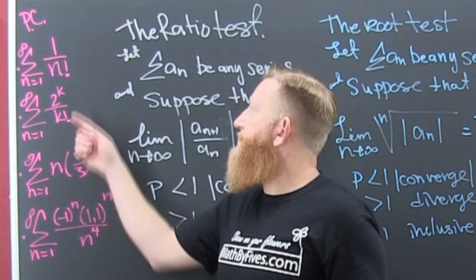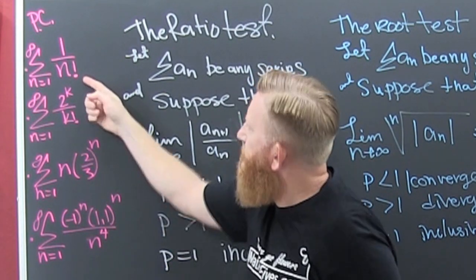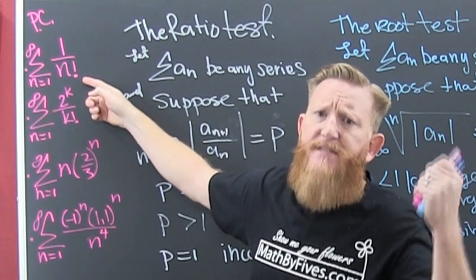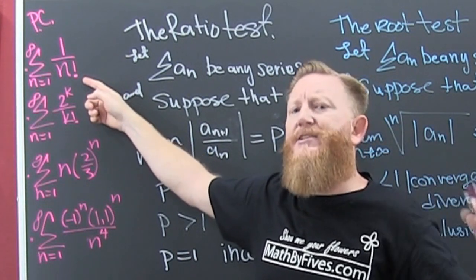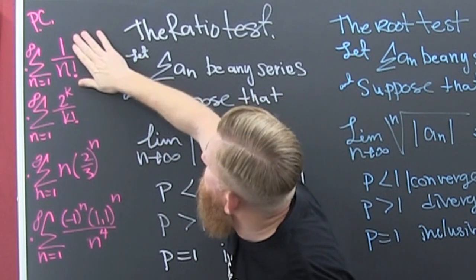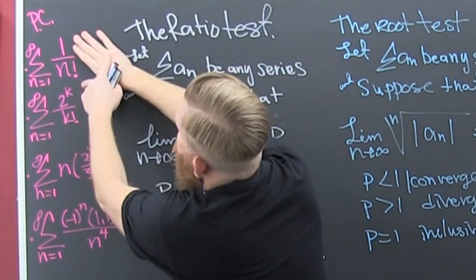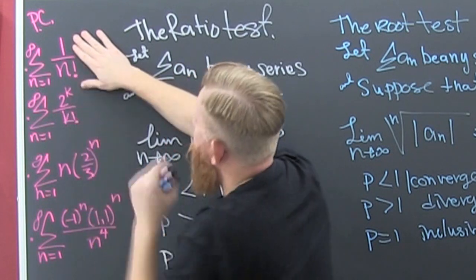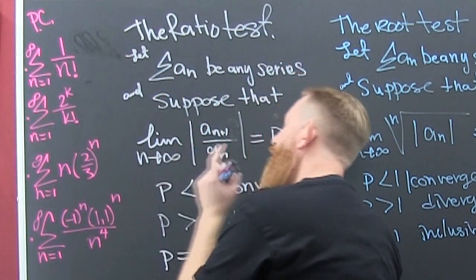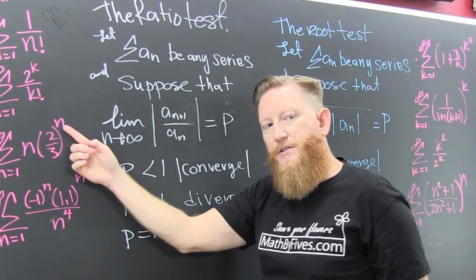When do you want to use the ratio test? Any of these in the playlist collection. At the end of this video there's a playlist — click it, watch them in order. You're going to want to use the ratio test on anything that has factorials. Anything with factorials. Also, another good place to use it is on exponential functions.